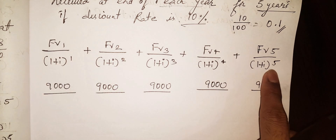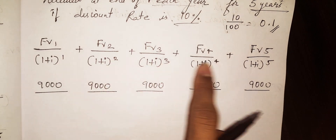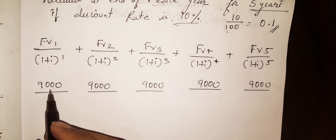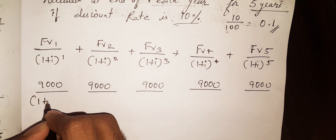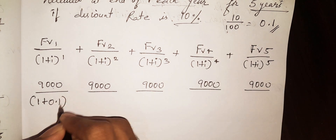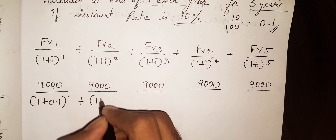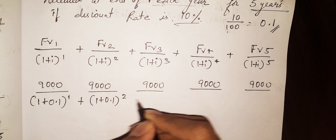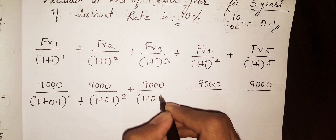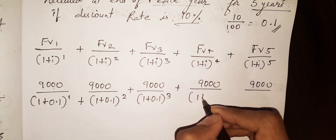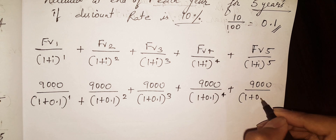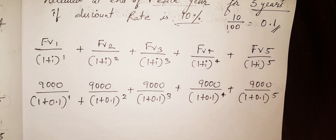So the formula — you already know it. This is the formula to calculate when there is an even cash flow. So: 9000 divided by (1 + 0.1) to the power of 1, plus 9000 divided by (1 + 0.1) to the power of 2, plus to the power of 3, to the power of 4, and to the power of 5.